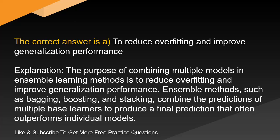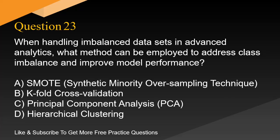The correct answer is A: to reduce overfitting and improve generalization performance. The purpose of combining multiple models in ensemble learning methods is to reduce overfitting and improve generalization performance. Ensemble methods, such as bagging, boosting, and stacking, combine the predictions of multiple base learners to produce a final prediction that often outperforms individual models.